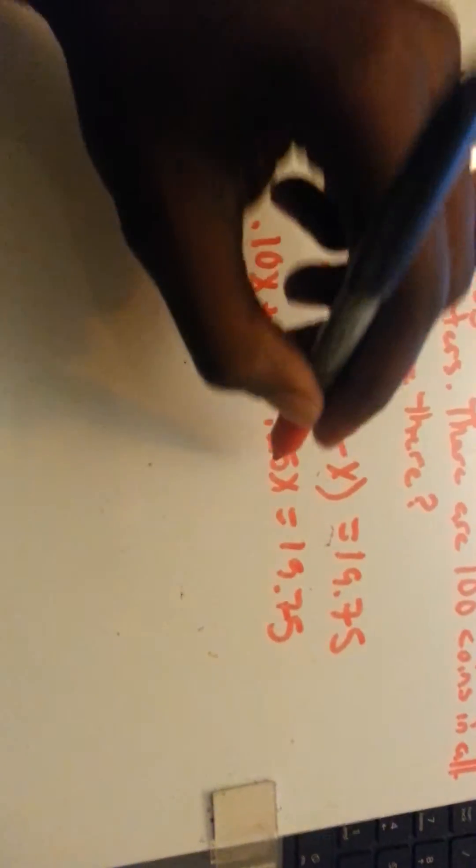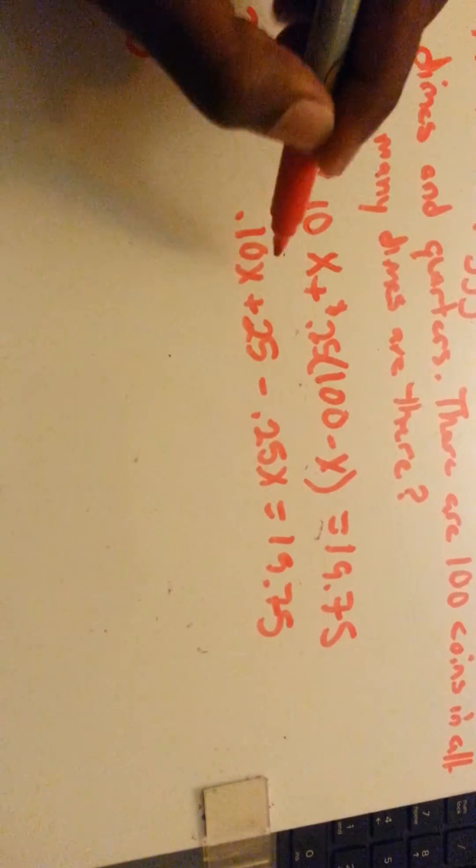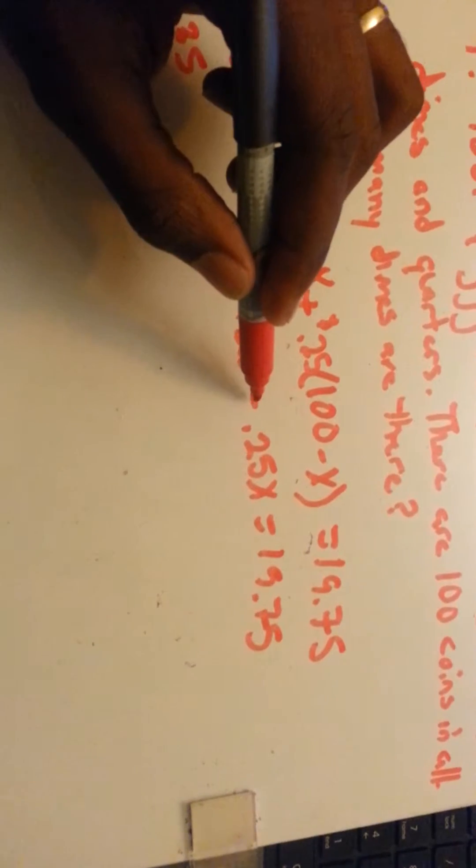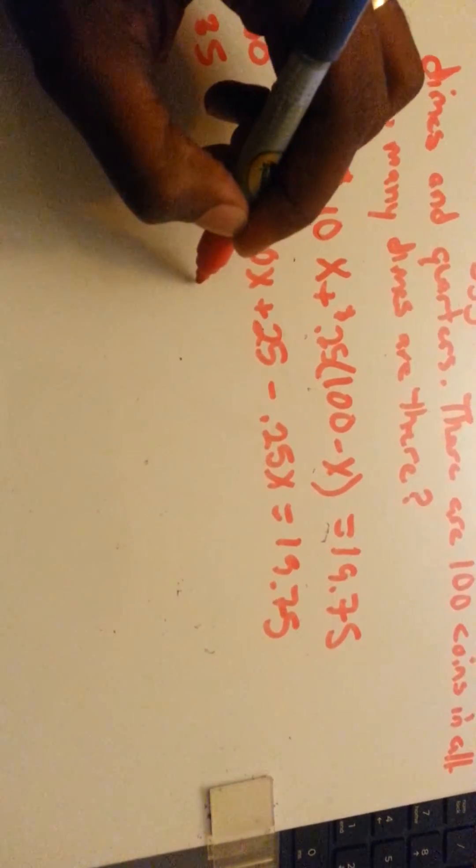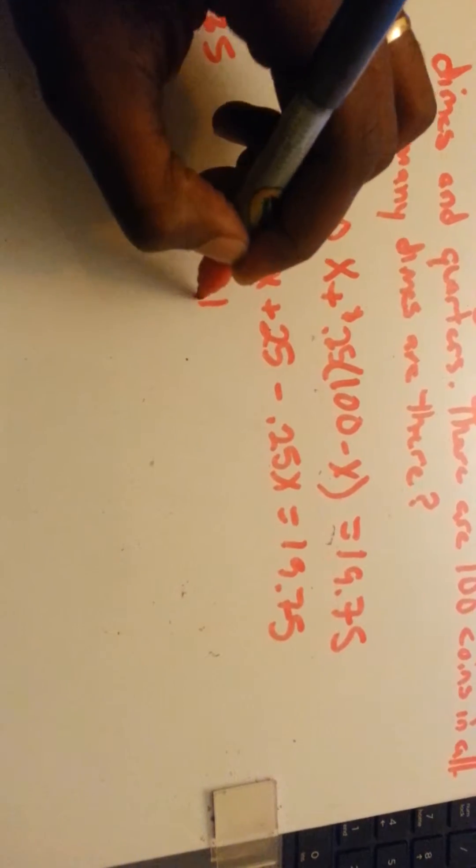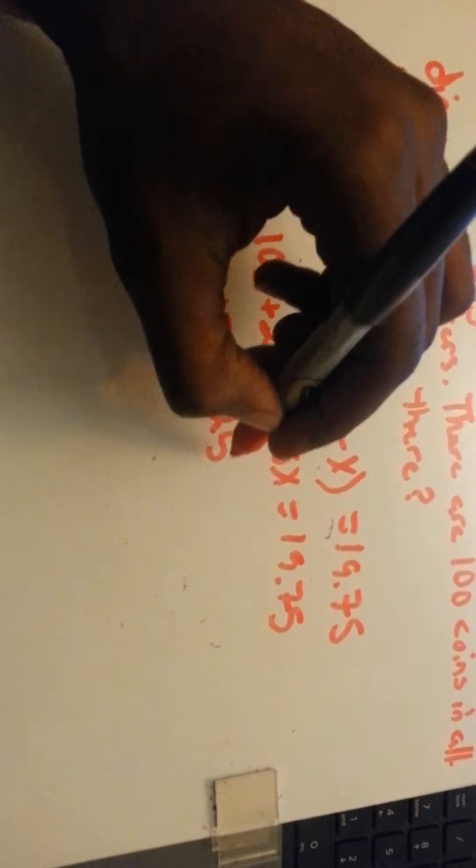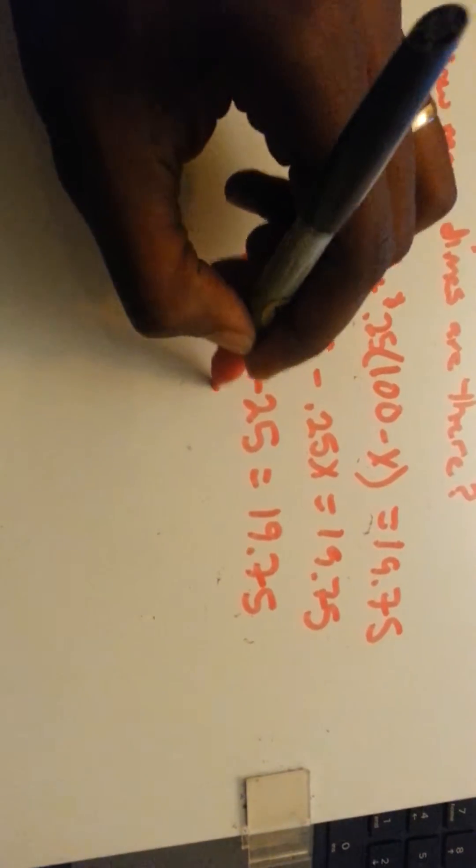We're going to get the like terms together. We have 0.10X and negative 0.25X, so that is negative 0.15X plus 25 equals 19.75. So we have to subtract 25 from both sides.